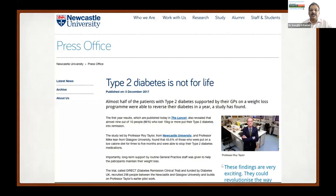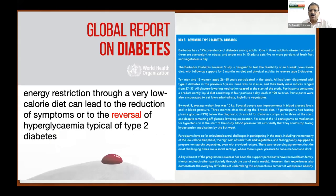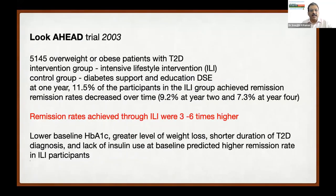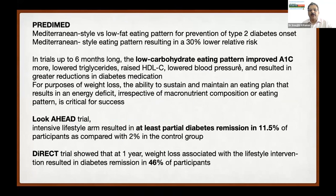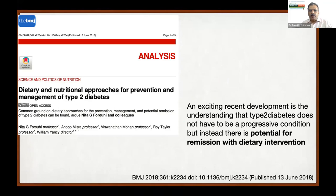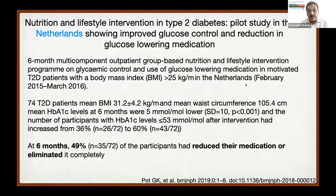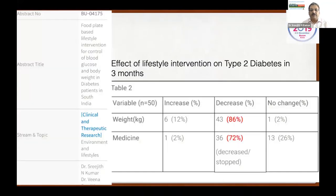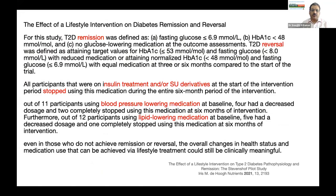The path-breaking DiRECT study showed that type 2 diabetes is not for life. After that study, a global WHO report said that reversal should be considered. The Barbados Diabetes Reversal Study proved this in an obese population. The Look AHEAD trial showed remission rates three to six times higher with intensive lifestyle intervention. The PREDIMED study showed that a low carbohydrate eating pattern improved HbA1c. Results from the Netherlands also authenticated this. In our own diabetes center, within three months we achieved weight loss in 86% of participants, and 72% either decreased or stopped drugs — presented at the last IDF meeting.